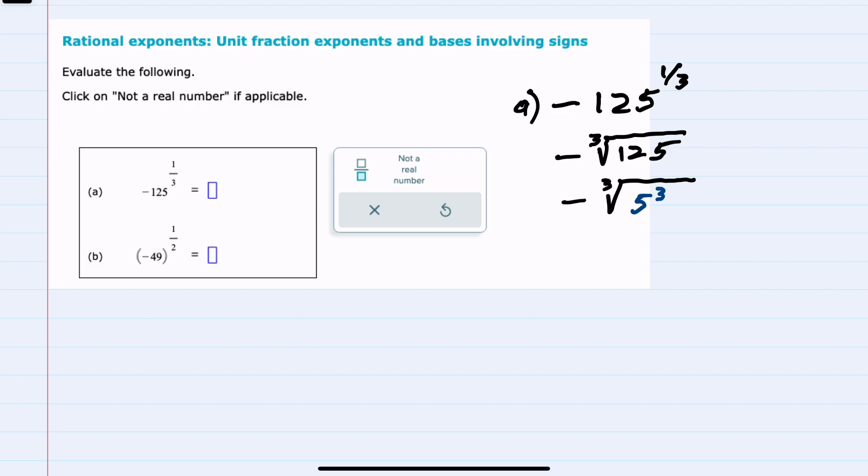Then evaluating that root, the third root and the third power would cancel. I still have the negative on the outside, and the root has simplified to just 5, so a is negative 5.